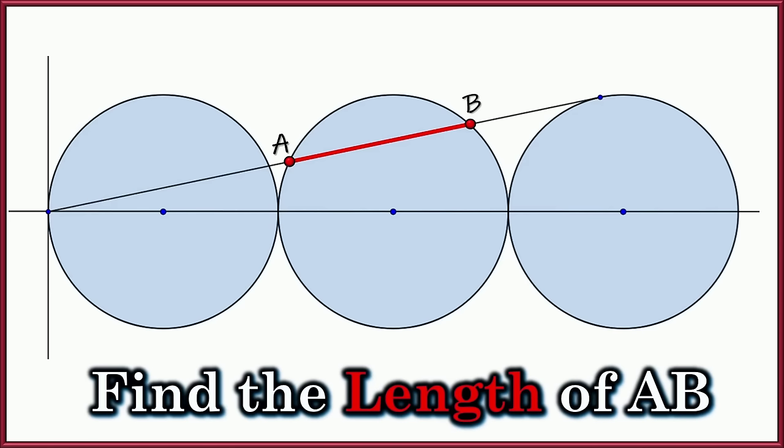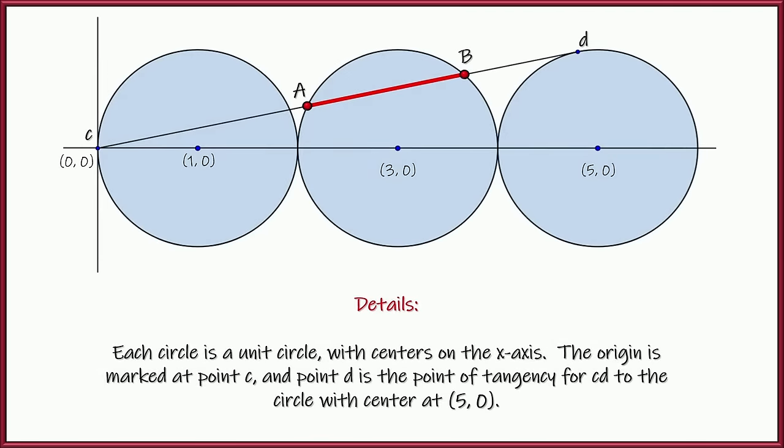Hello and welcome. This is a really cool geometry problem. We've got three circles and a line from here to here. It's tangent, and we have to find the distance of A to B where that line intersects that middle circle. So here are the details, and then I'll give you a chance to pause the video and dive in.